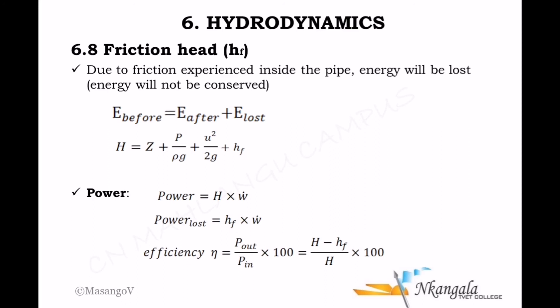The amount of friction depends on the velocity of the water inside the pipe and also on the smoothness of the pipe surface. In N5 we are not required to determine frictional energy loss ourselves — that will be covered in N6. The frictional energy head hf is the energy per unit weight that is lost, so the total head H equals z plus pressure over ρg plus u² over 2g plus hf.